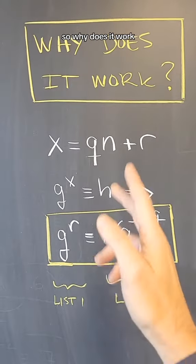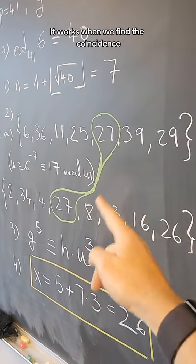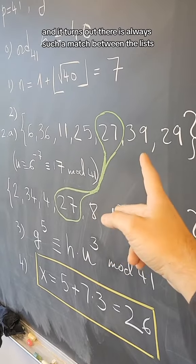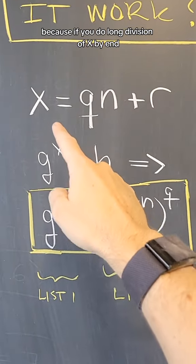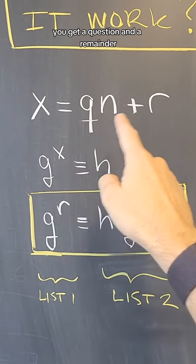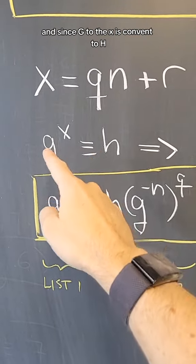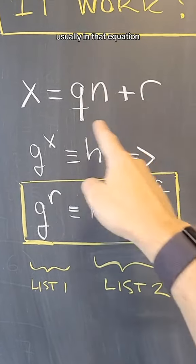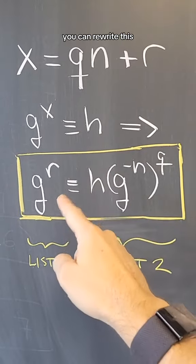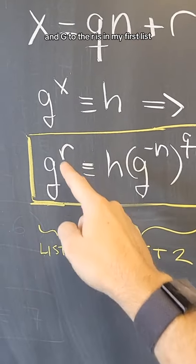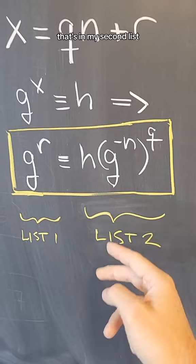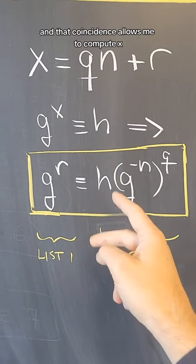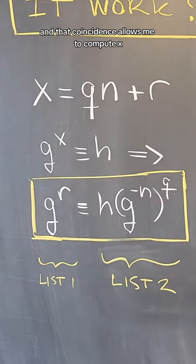Why does it work? It works when we find a coincidence, and it turns out there is always such a match between the lists. Because if you do long division of x by n, you get a quotient and a remainder. Since g to the x is congruent to h, using that equation, you can rewrite this in this form. g to the r is in the first list, and h times u to the q is in the second list. So there is a coincidence, and that coincidence allows us to compute x.